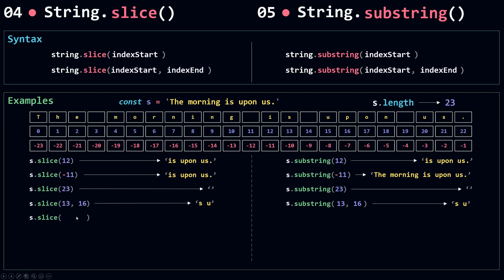Now if I swap the two indexes — giving 16 as the index start and 13 as the index end — slice returns an empty string. But for substring, if the index start is greater than the index end, it swaps them automatically, so it starts from 13 and ends at 16 and returns the same result as before. That's the second difference between slice and substring.